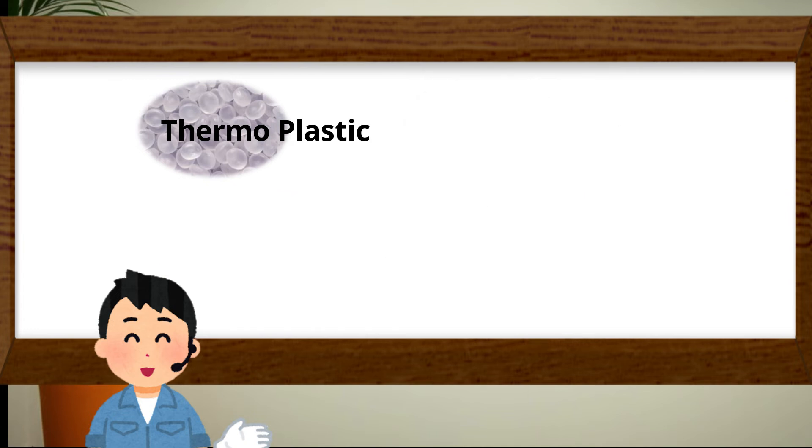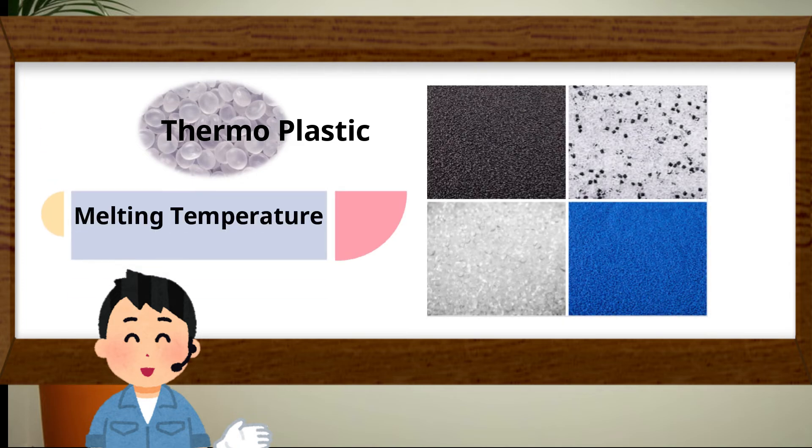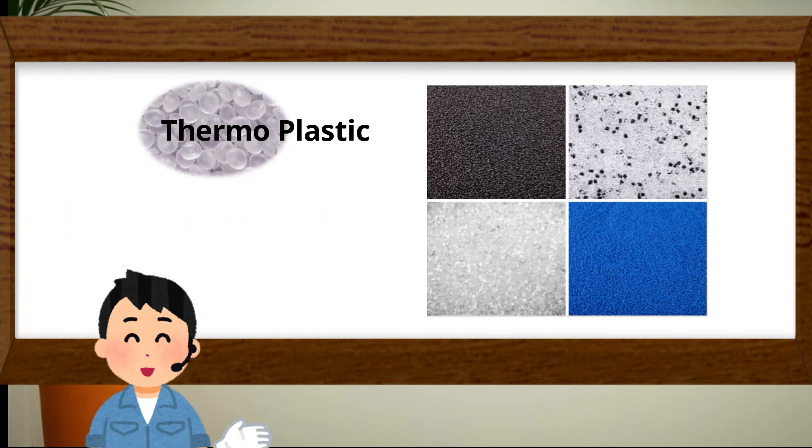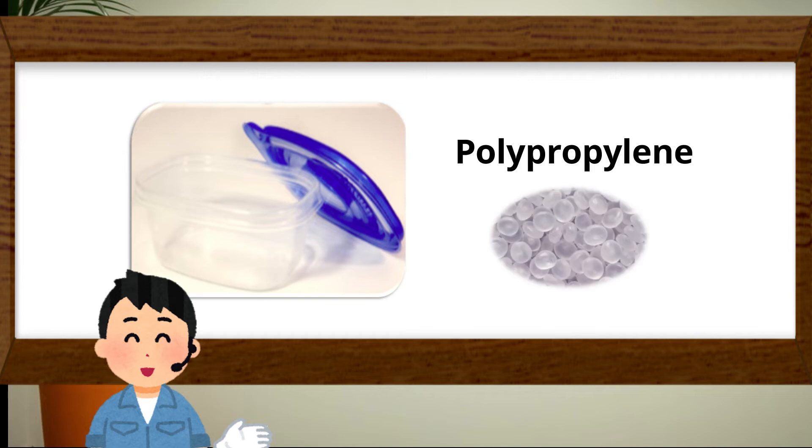Thermoplastic is commonly used material for injection molding. There are many kinds of thermoplastic. The melting temperature and feature is different depending on the material. For example, food packaging is made by polypropylene.